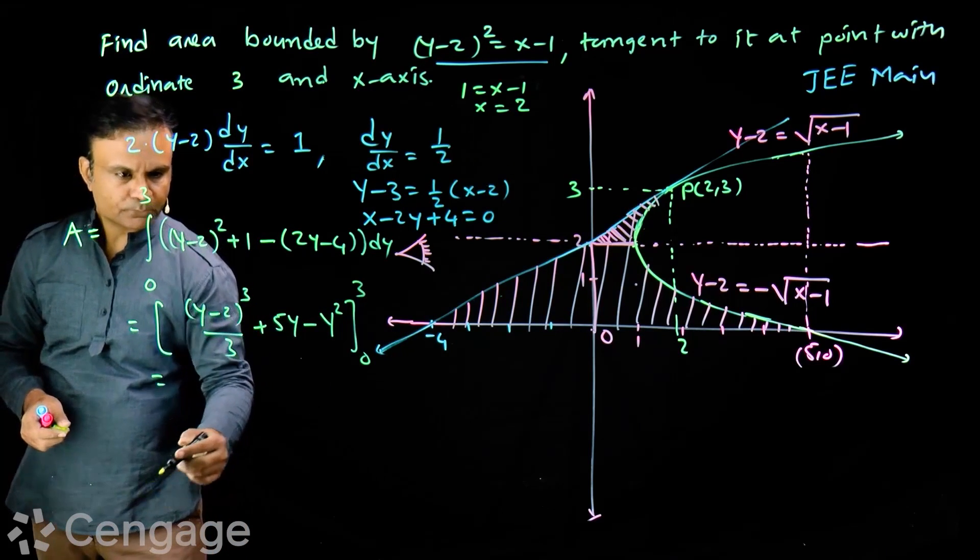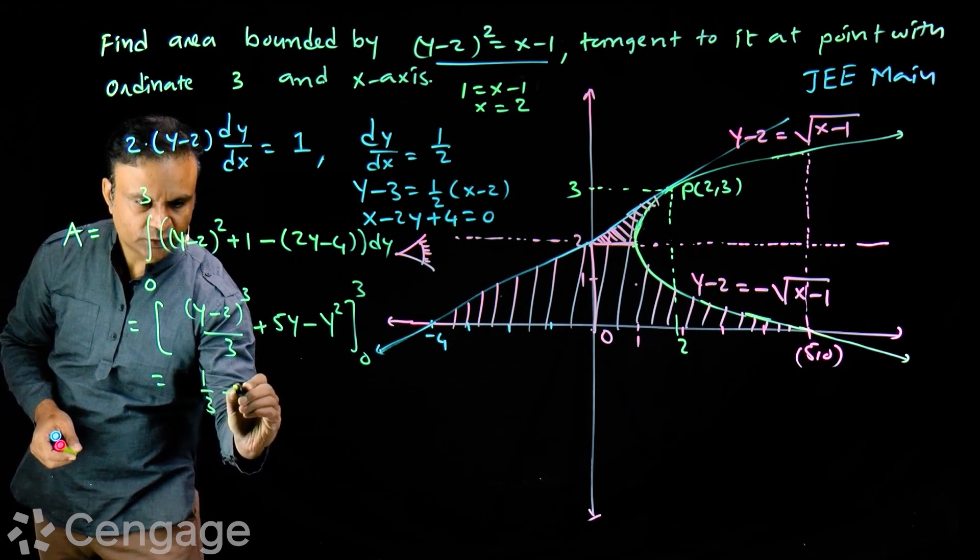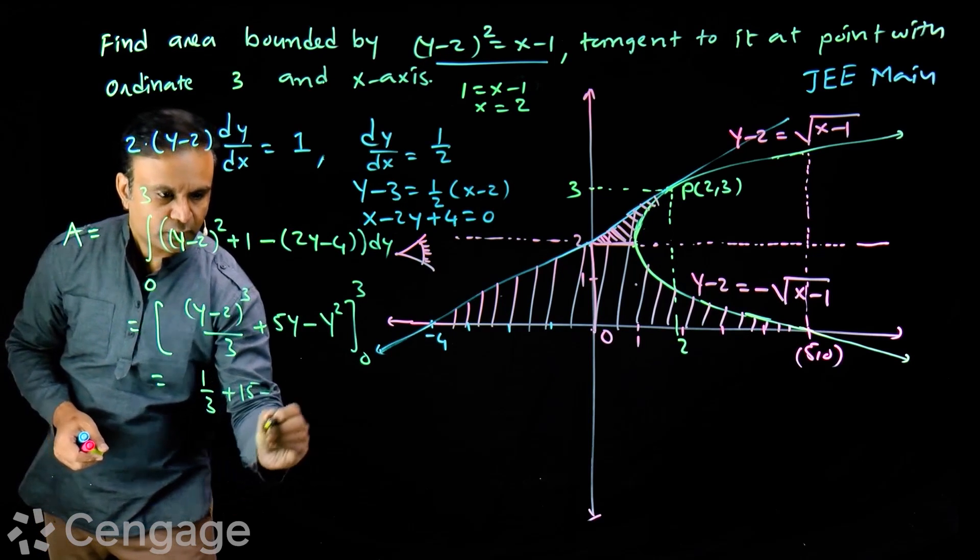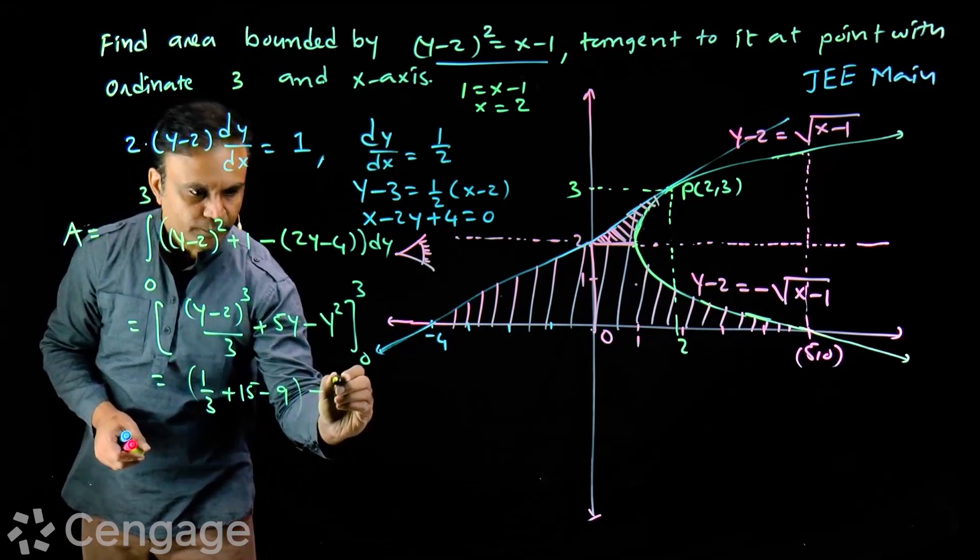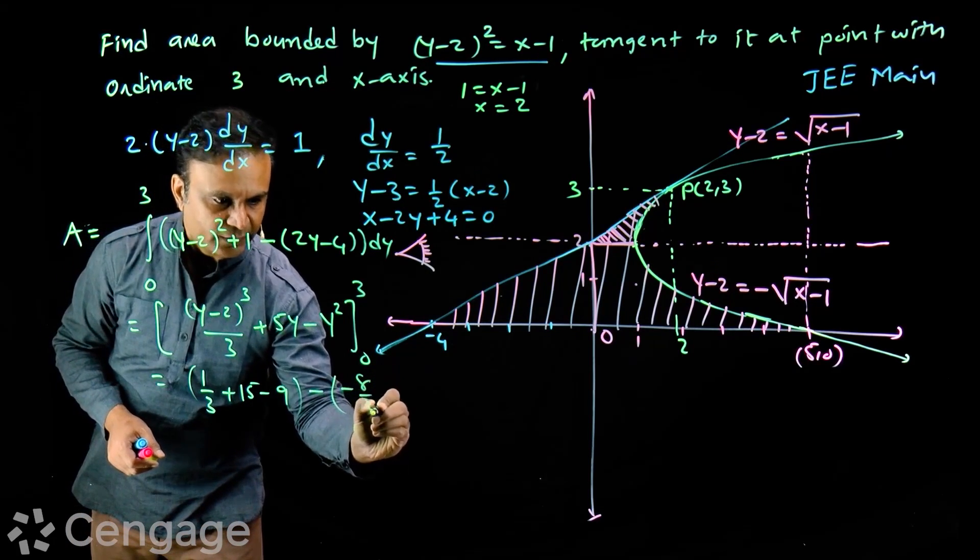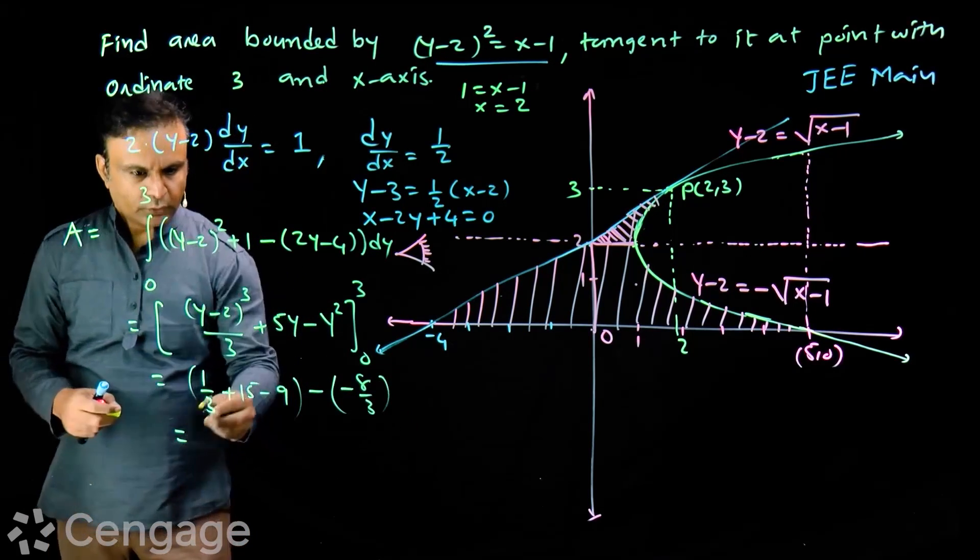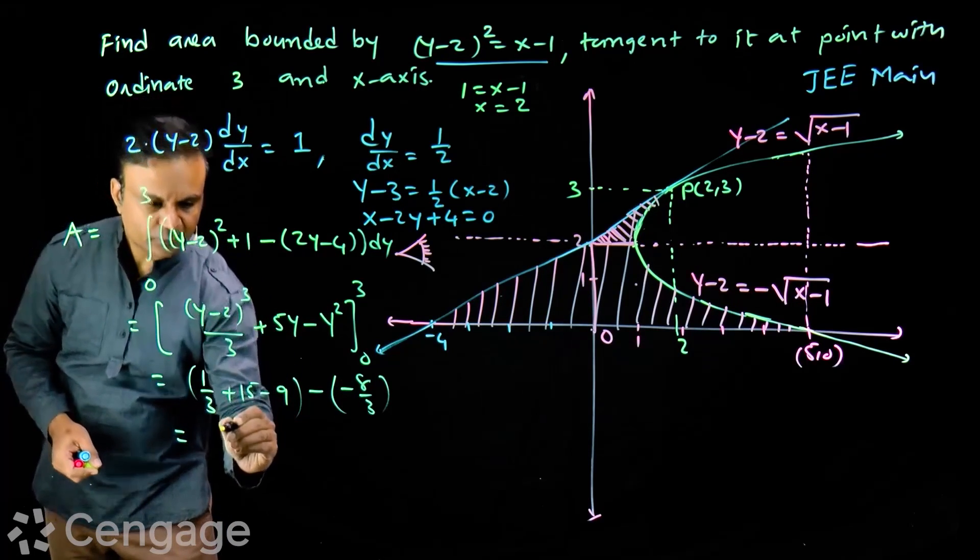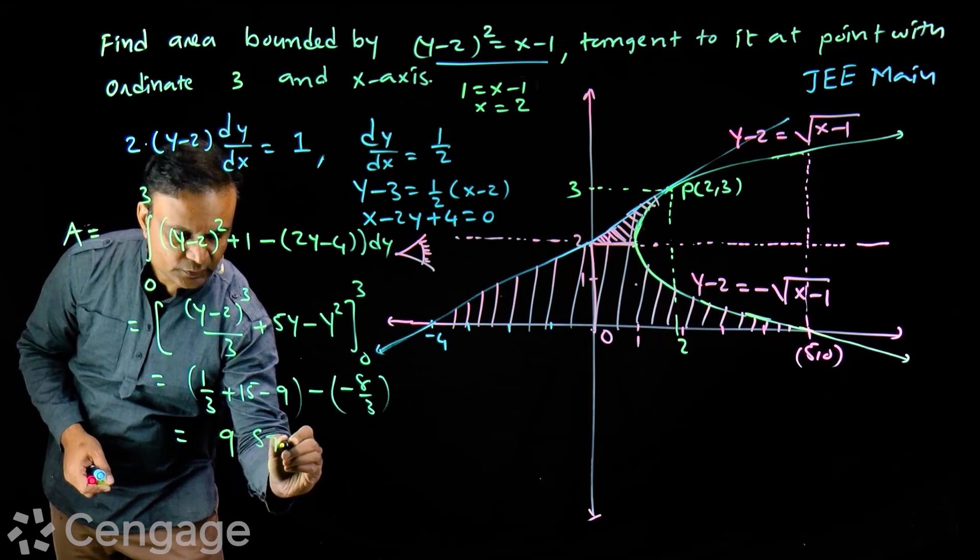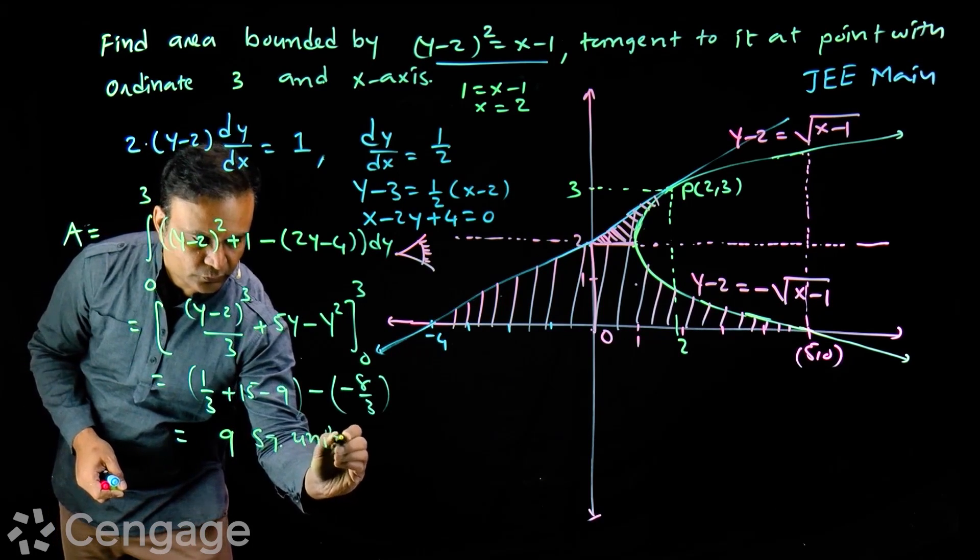Put 3 here: we get 1/3 + 15 - 9. Put 0: we get -8/3. So 1/3 + 8/3 = 9/3 = 3. 3 + 15 = 18. 18 - 9 = 9. So the area is 9 square units.